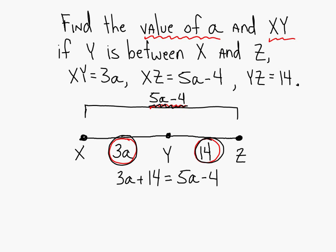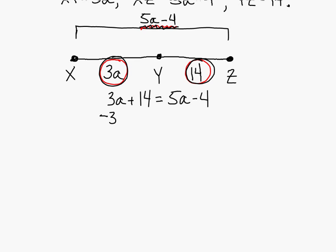Small piece plus a small piece equals the entire piece. So now, since they asked you to find A, you're going to solve for A. Subtract 3A from each side. So 14 will equal 2A minus 4.